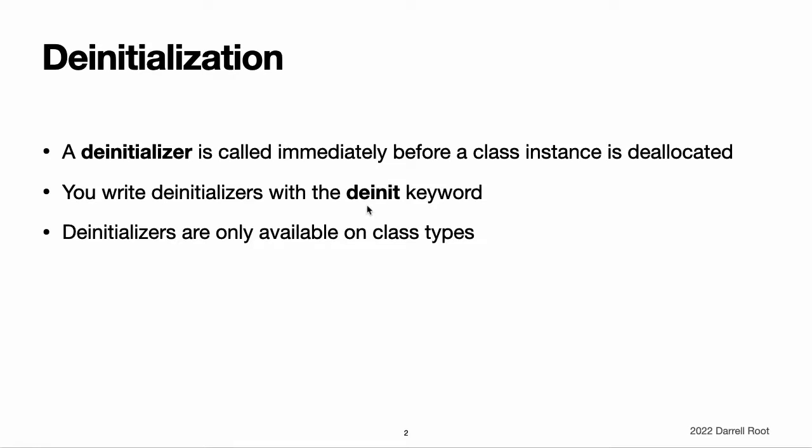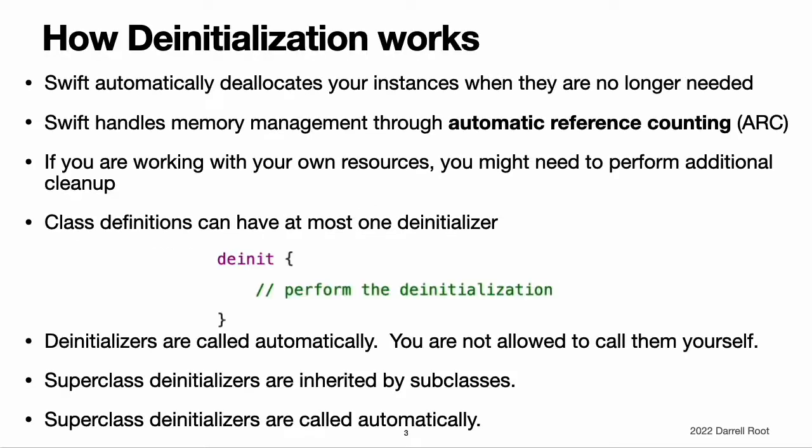Deinitializers are only available on class types. How deinitialization works. Swift automatically deallocates your instances when they are no longer needed to free up resources. Swift handles the memory management of instances through automatic reference counting, ARC, as described in automatic reference counting.